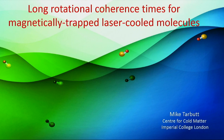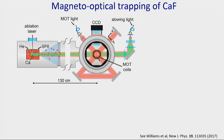Let me begin by telling you about some of the methods we use to make our cold molecules and put them into magnetic traps. We use mainly calcium fluoride molecules, and our experiments begin with a magneto-optical trap of calcium fluoride. It starts on the left-hand side with a cryogenic buffer gas source emitting short pulses of molecules traveling at about 160 meters per second. We slow these molecules using counter-propagating laser light that is frequency-chirped to compensate for the changing Doppler shift, decelerating them to about 10 meters per second before capturing them in a magneto-optical trap.